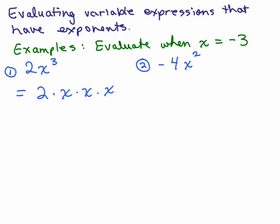I actually think when people do it this way they make less mistakes. So now we're going to plug in negative 3 for x. So I've got negative 3 times negative 3 times negative 3 times the 2 at the beginning. The answer is going to be negative because we have 3 negative signs, and multiplying all that together we should get negative 54.